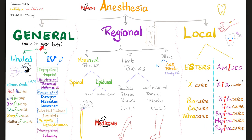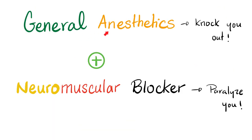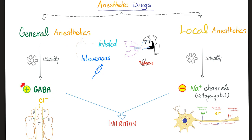If I want to give you a general anesthetic, we have the inhaled option and the intravenous option. You choose one of these plus a neuromuscular blocker, which makes intubation easier and makes the surgery easier. How do general anesthetics work? They stimulate GABA, which is inhibitory. How about local anesthetics? They inhibit the sodium channels, causing prevention of depolarization.